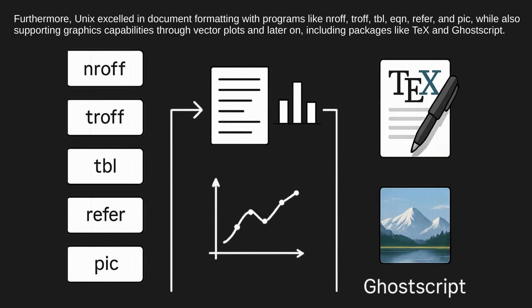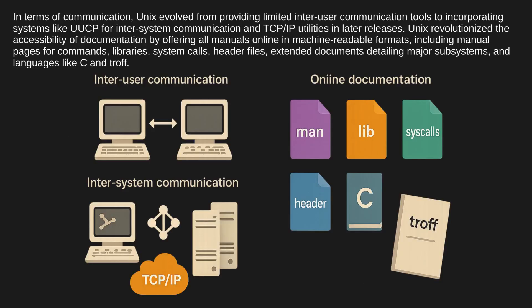Unix excelled in document formatting with programs like nroff, troff, tbl, eqn, refer, and pic, while also supporting graphics capabilities through vector plots and later including packages like TeX and Ghostscript. Unix evolved from providing limited inter-user communication tools to incorporating systems like UUCP for inter-system communication and TCP/IP utilities in later releases. Unix revolutionized documentation by offering all manuals online in machine-readable formats, including manual pages for commands, libraries, system calls, header files, and extended documents for major subsystems.